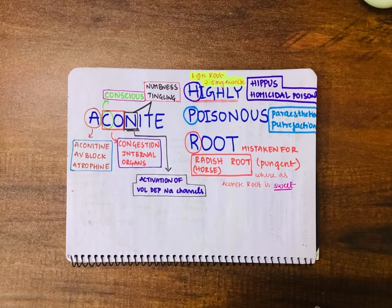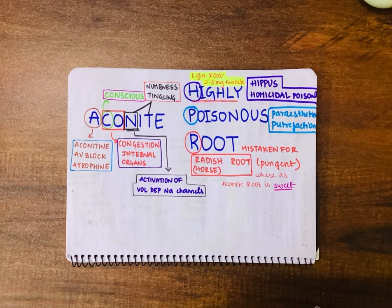The word 'highly' in 'highly poisonous root' tells us that this root is highly poisonous. The fatal dose is 1 gram of the root, or 2 to 5 mg of aconitin.